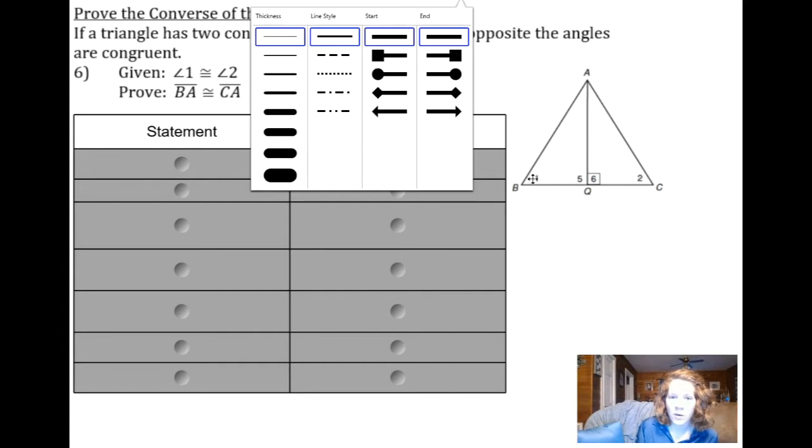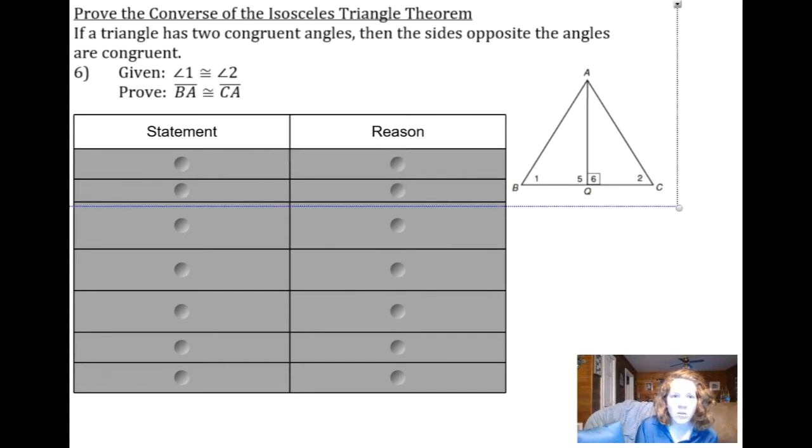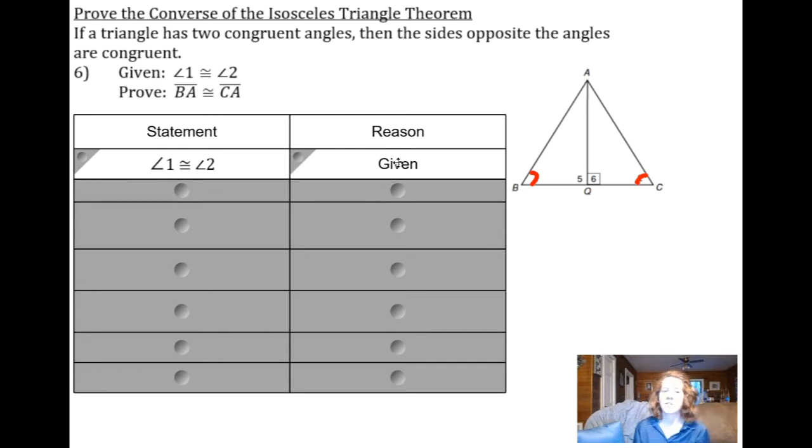As usual, I'm going to mark that angle 1 is congruent to angle 2, and I'm going to put that in our proof because that's probably a good place to start. I know that angle 1 is congruent to angle 2.